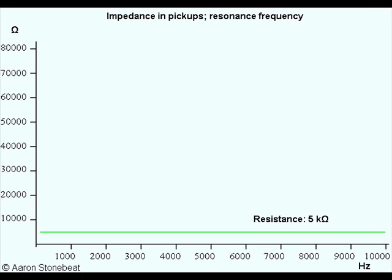But then, a coil also has a reactance, just like a capacitor does — a frequency-dependent resistance. Only in coils, it's the other way around than it is in capacitors. Coils have lower reactance for low frequencies and higher reactance for high frequencies.